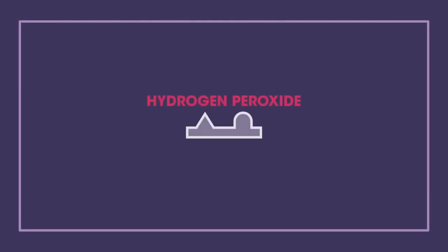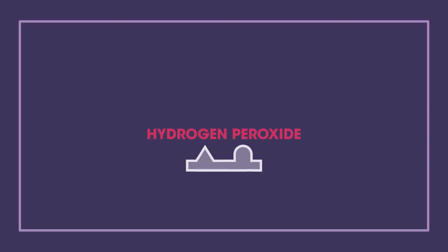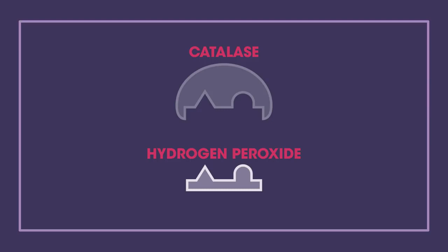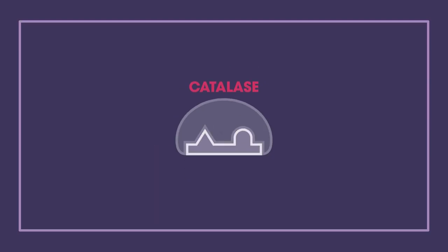Hydrogen peroxide is often formed as a result of the reactions in cells and if it is left behind to build up, it is harmful. Luckily, we have catalase enzymes that are really fast. They break the hydrogen peroxide down into harmless water and oxygen.